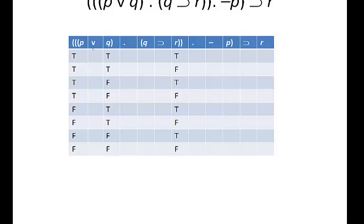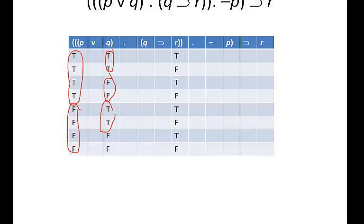Here are our conventional set of truth values: four Ts, four Fs under P; two Ts, two Fs, two Ts, two Fs under Q; and alternating T, F under R. This exhausts all possible combinations of truth values for these three variables. So we're going to go ahead and fill in consistently all of the other instances of P, Q, and R.